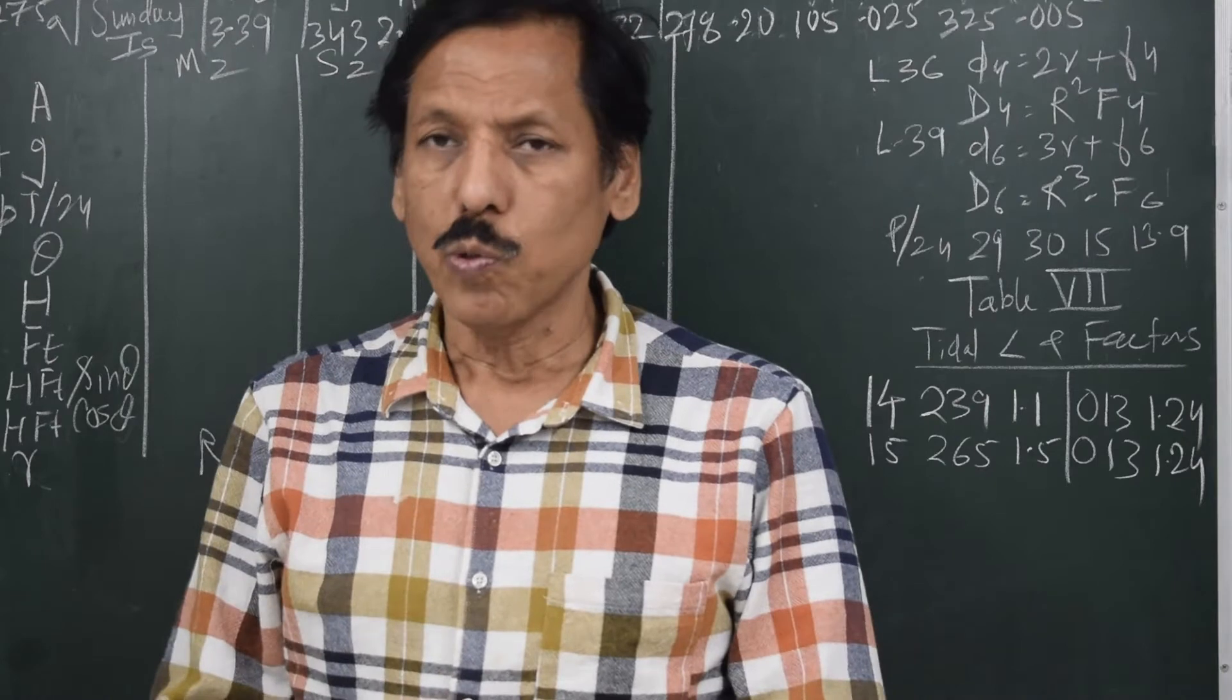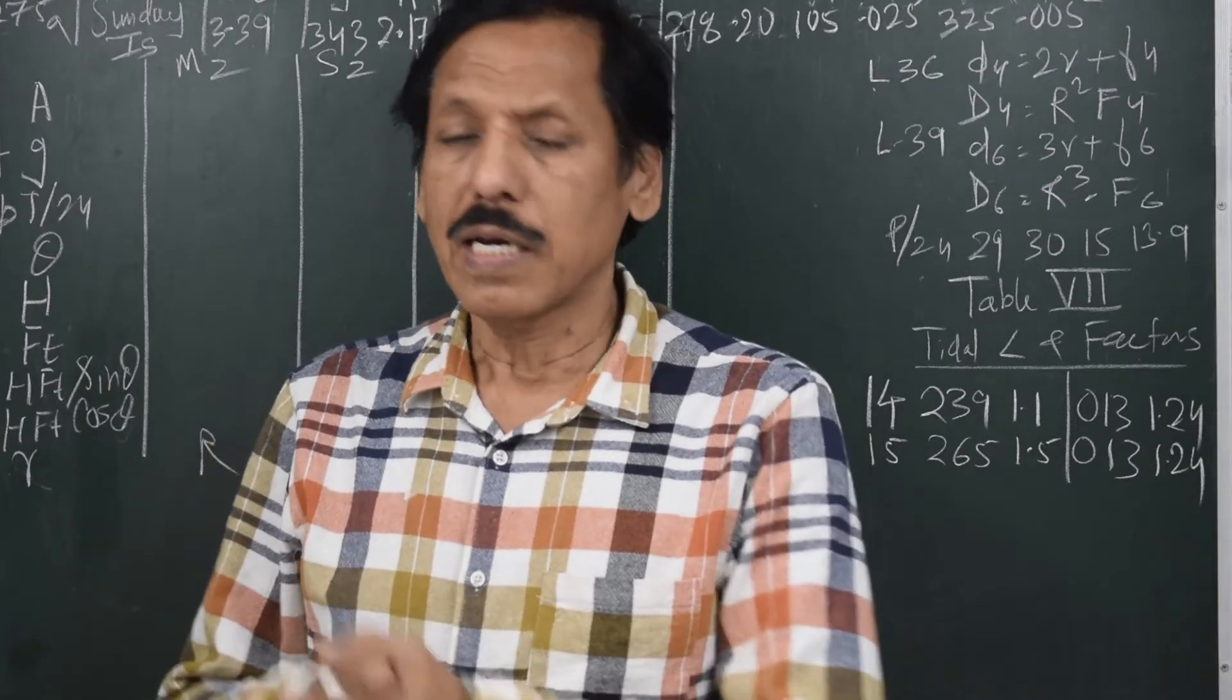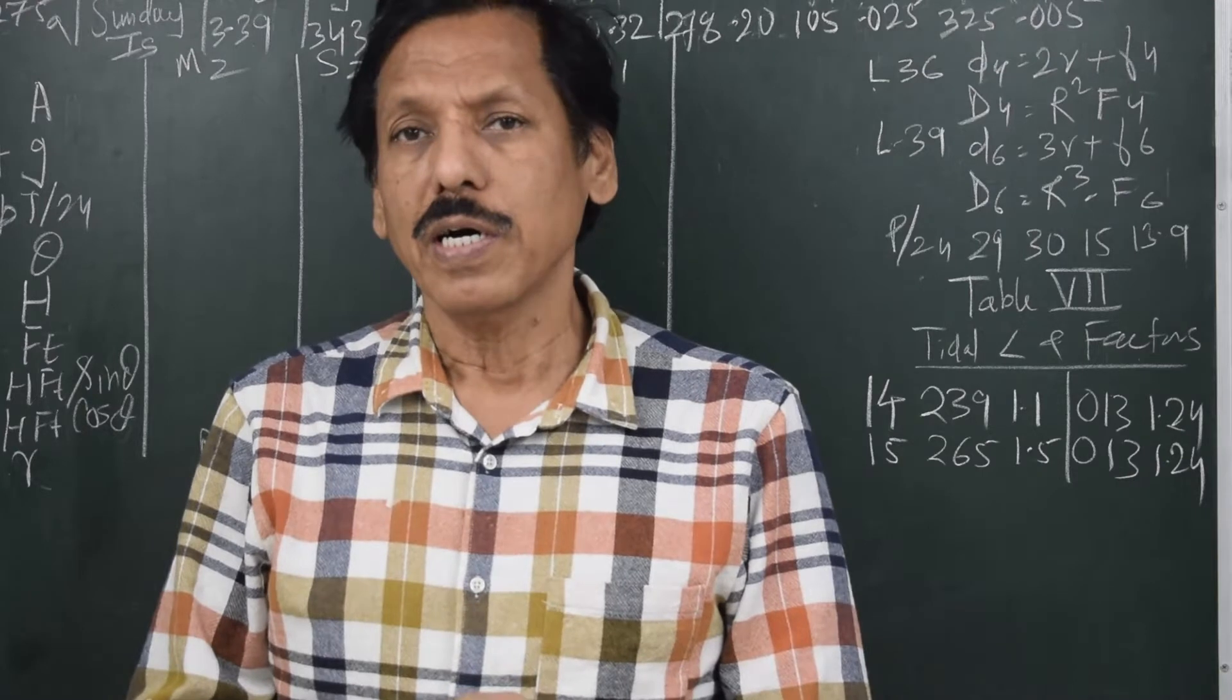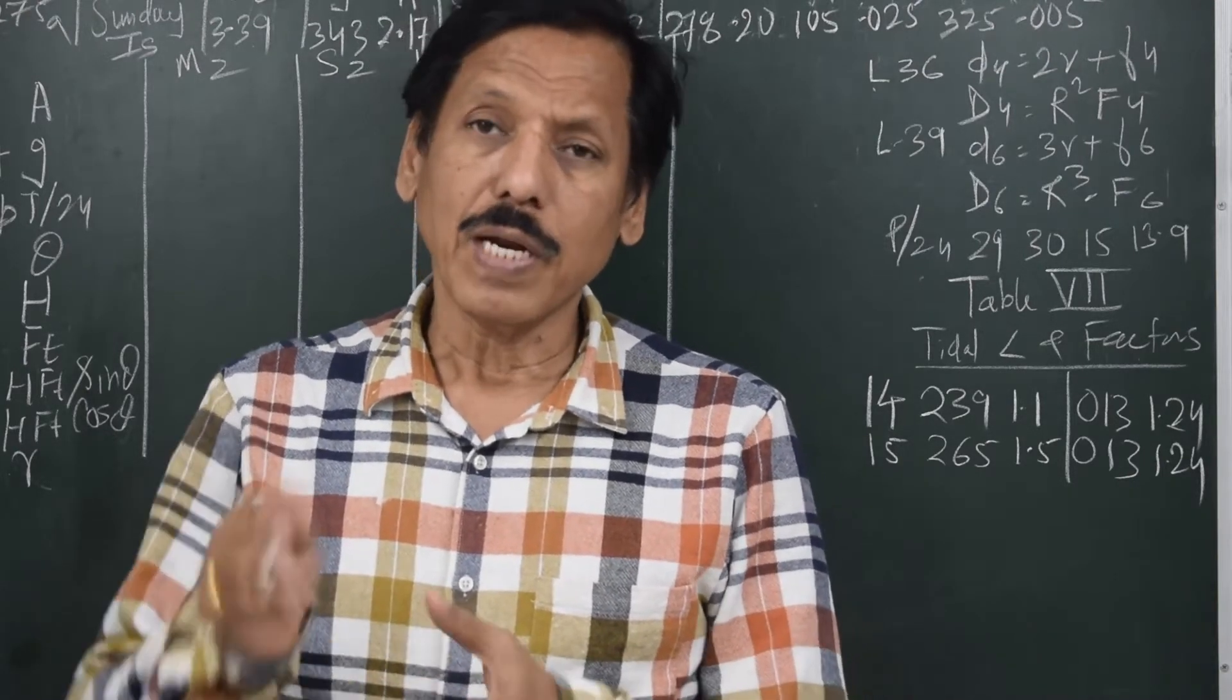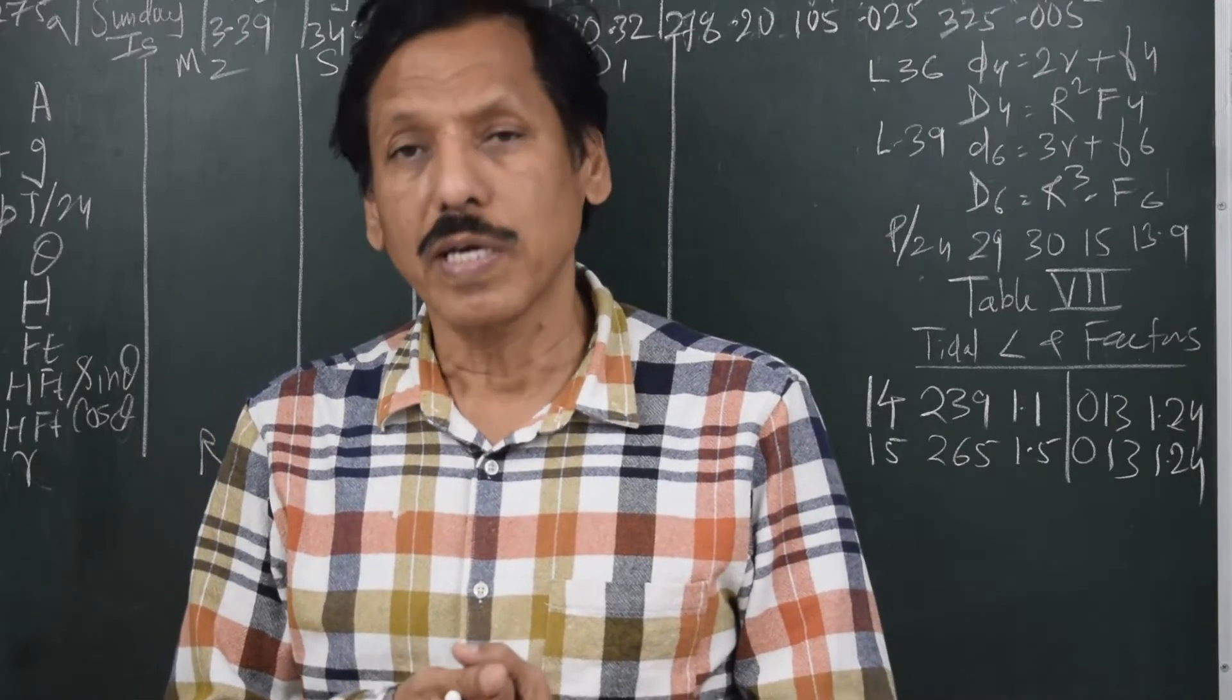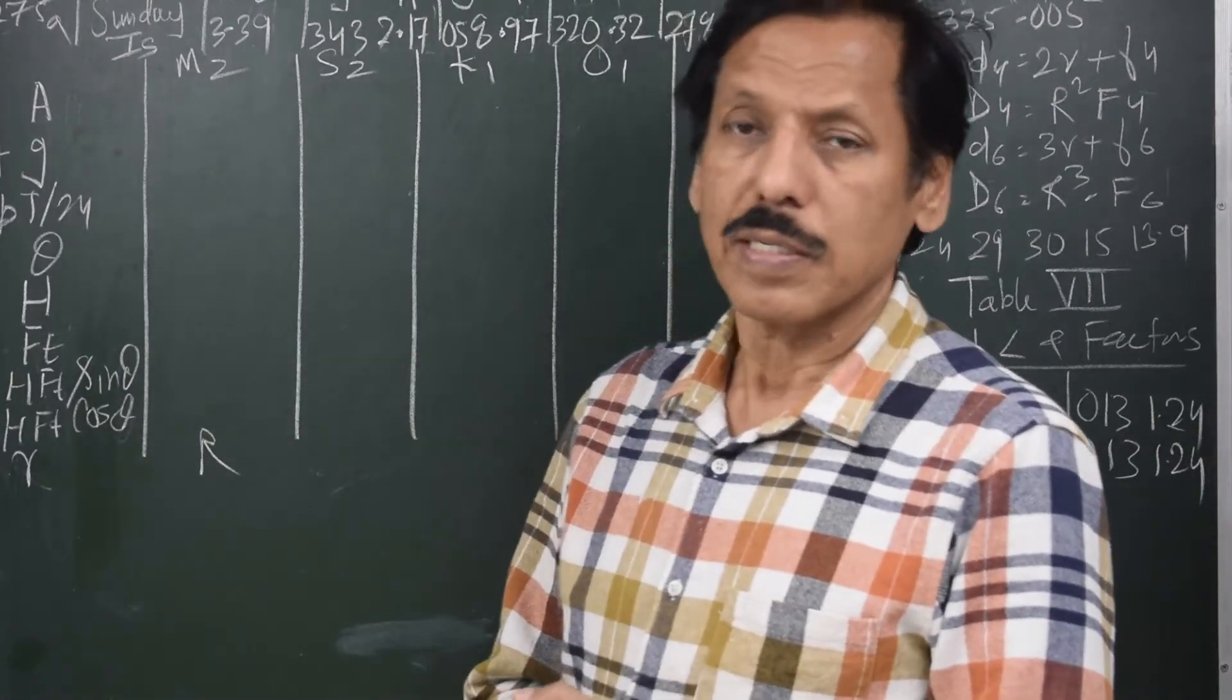I have drawn four columns: M2, S2, K1, O1. These are the partial tides. I am going to do tidal calculations by harmonic constant methods. There are many harmonic factors which affect the tide, for example gravitational pull of moon and sun, then there are semi-diurnal component, diurnal component, the component because of the eccentricity, the effect caused by the declination, effect caused by the equinoxes.